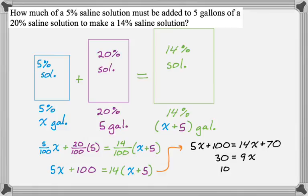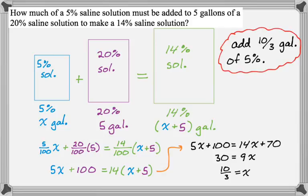This tells me that 10 thirds is equal to x, or 30 over 9, but you reduce down to 10 thirds. The answer to this question is that I want to add 10 thirds gallons of 5% solution. If I add that to 5 gallons of 20% solution, I end up with 14% saline solution. That's how you answer the question.